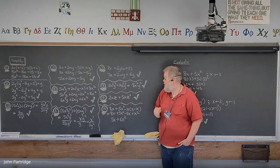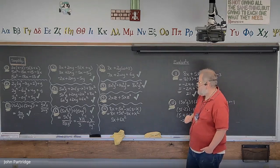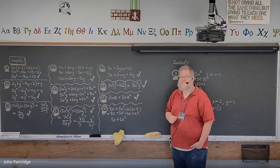Problem 9: 2xz + 5xz². Are there like terms? No — the z-exponents differ. Final answer: 2xz + 5xz².